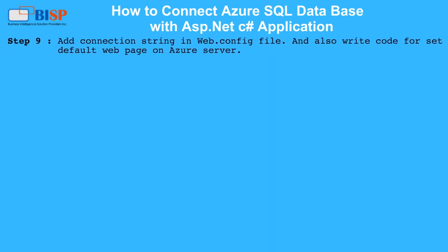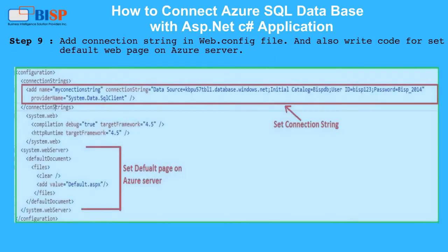Step 9: Add the connection string in Web.Config, and also write code to set the default web page on the Azure Server.